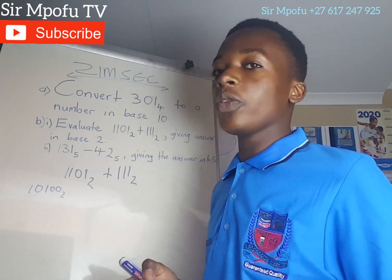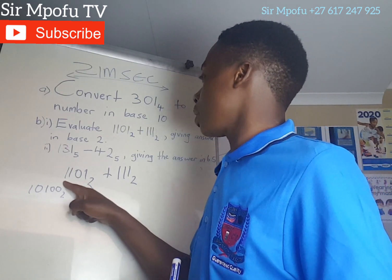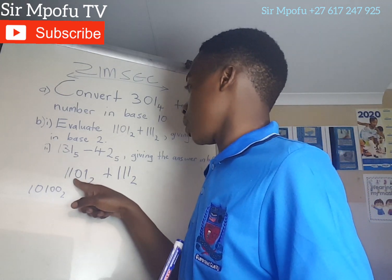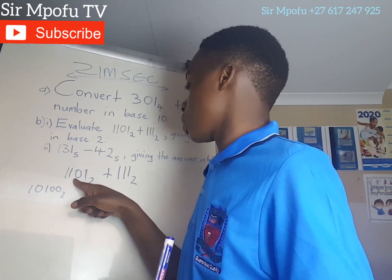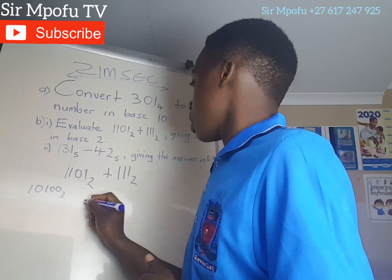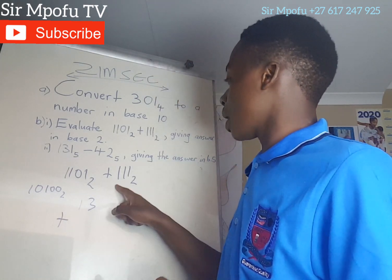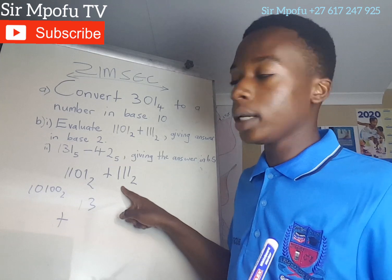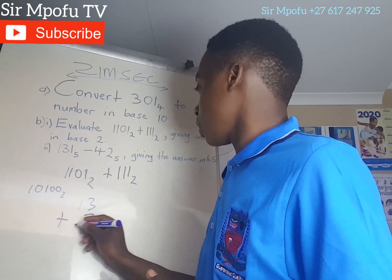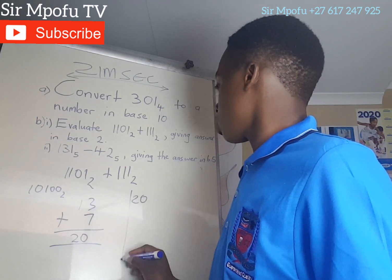Right, now verifying using another method: 2 times 1 plus 2 is 3. 3 times 2 is 6. 6 plus 0 is 6. 6 times 2 is 12, plus 1 is 13. And 2 times 1 plus 1 is 3. 3 times 2 is 6, plus 1 is 7. So 13 plus 7 equals 20 in base 10.